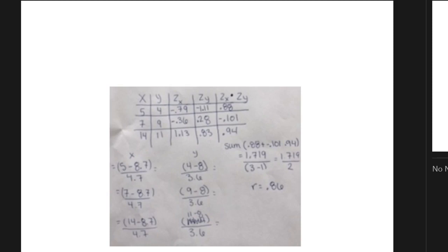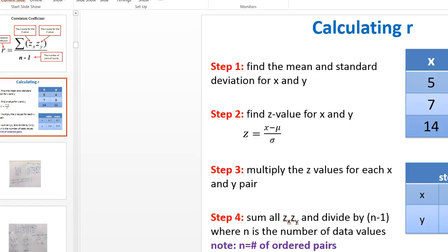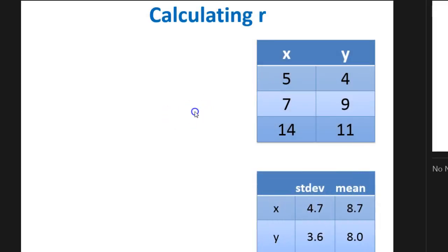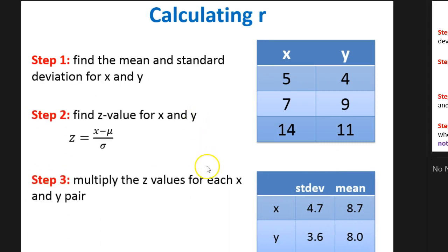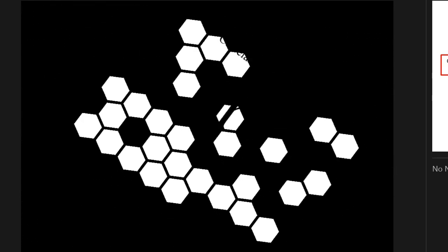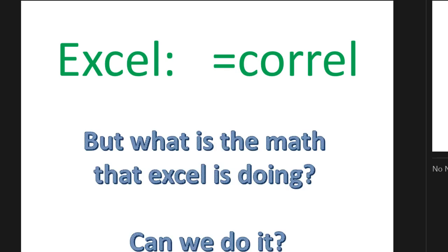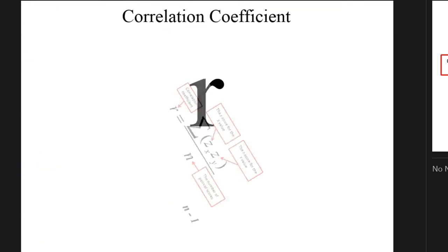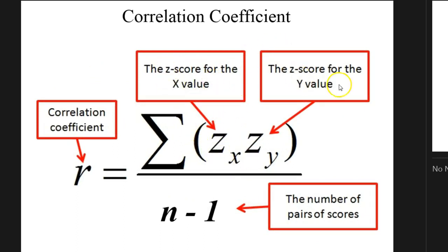I want you to stop the video right now and make sure you have this in your notes. Also make sure that you know how to put this into your calculator. Next, what we need to do is multiply the z-values for each x and y pair. The reason we're doing that is because this is part of our formula — we're taking the z-score for the x's and the z-score for the y's, multiplying each pair, and then finding the sum of them.